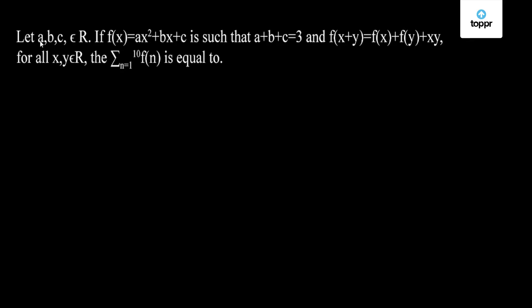Hi guys. The question states: let a, b, c belong to R. If f(x) = ax² + bx + c is such that a + b + c = 3, and f(x + y) = f(x) + f(y) + xy for all x, y belonging to R, then find summation n = 1 to 10 of f(n).